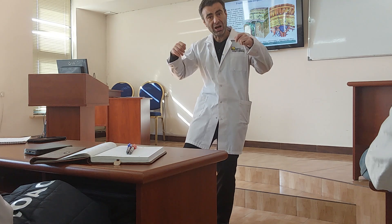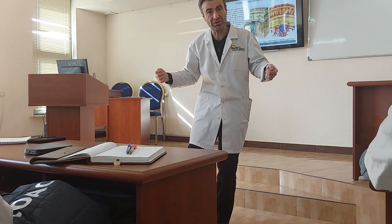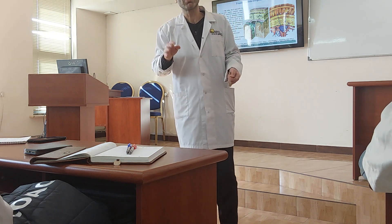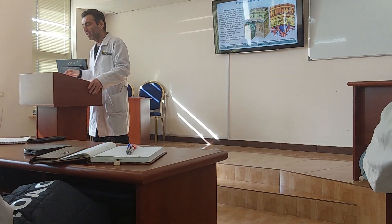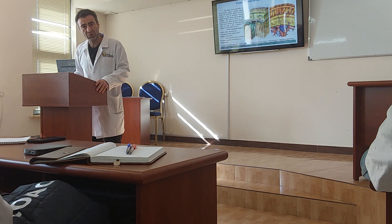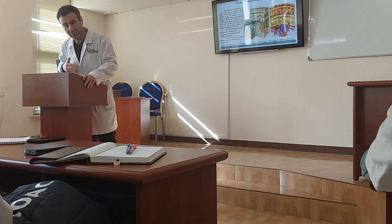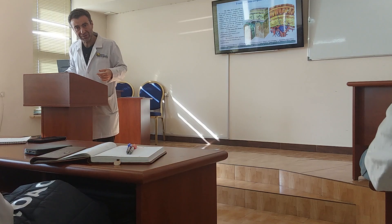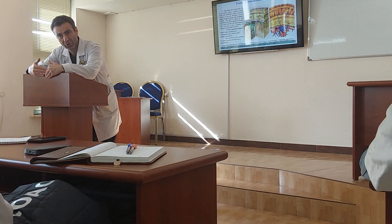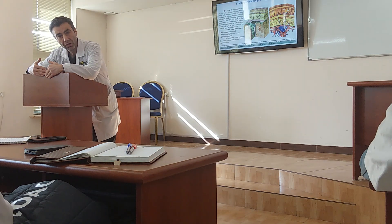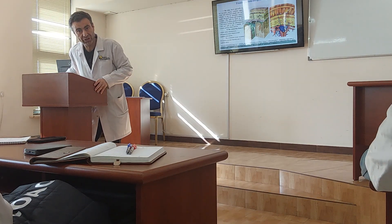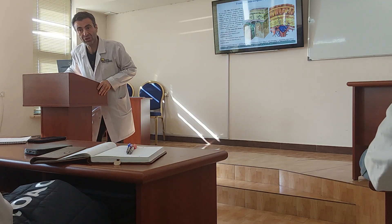If inside the subaponeurotic fat there is any pathological process, it can spread widely through the entire frontoparietal-occipital region. But the question is: can it go outside the borders? For example, can it spread from the frontoparietal-occipital region into the temporal region? The answer is no. The deep layer of the aponeurosis is fused to all borders of this region, so the roof is fused with the floor at the borders.